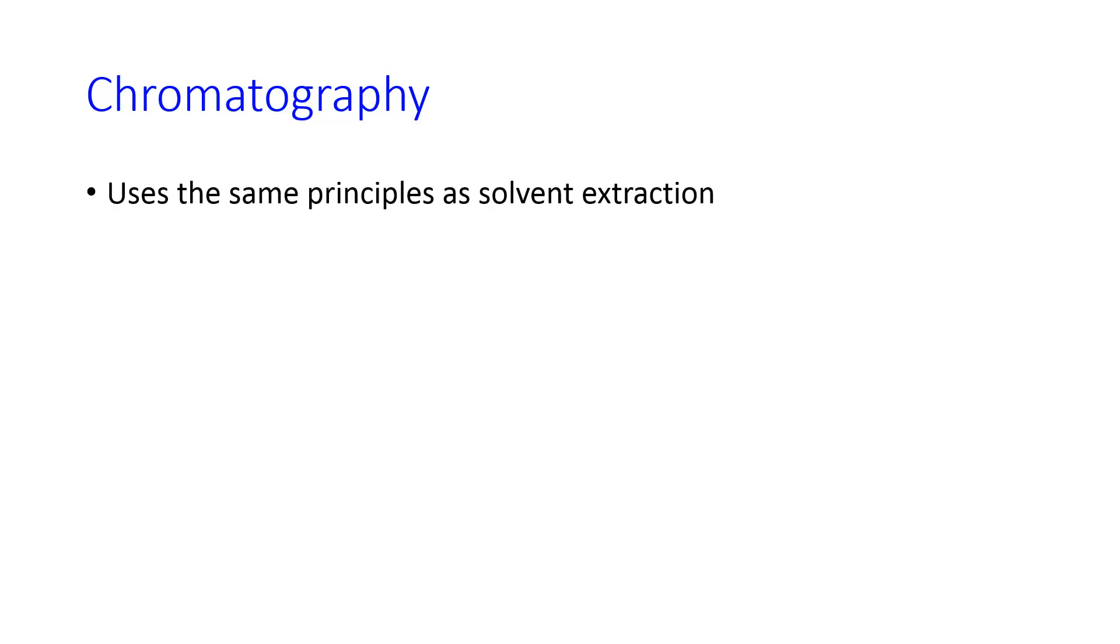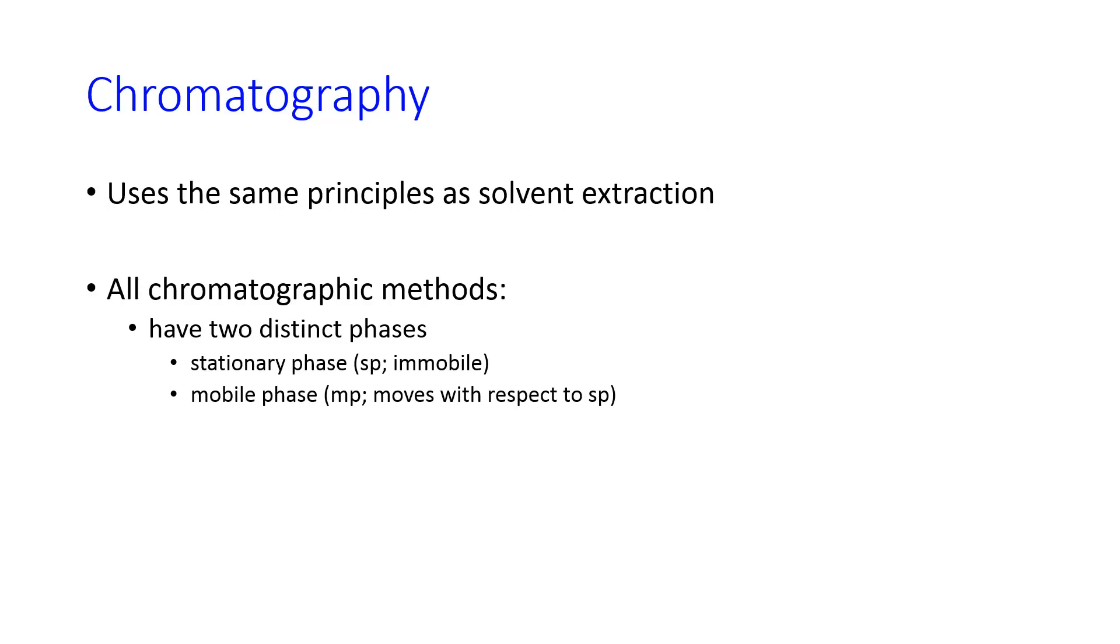Now, chromatography does use the same principles as solvent extraction. What you're worried about is the affinity of your analyte for two different phases. In this case, we call them the mobile phase and the stationary phase. All chromatic methods have these two phases. The stationary phase is the one that's immobile, and the mobile phase moves across the stationary phase. You've done this in organic chemistry when you did thin layer chromatography.